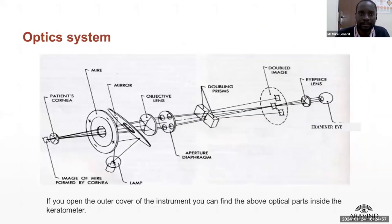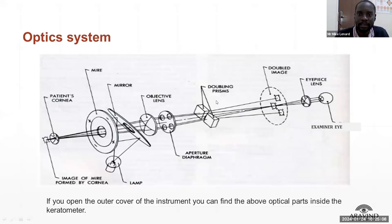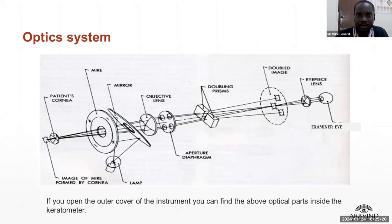On the optical system, if you open the equipment you will see this arrangement. We have an eyepiece, a doubling lens, an objective lens, a reflecting mirror, and the mires. This optical system makes up that equipment — that's what you can expect when you open it inside.